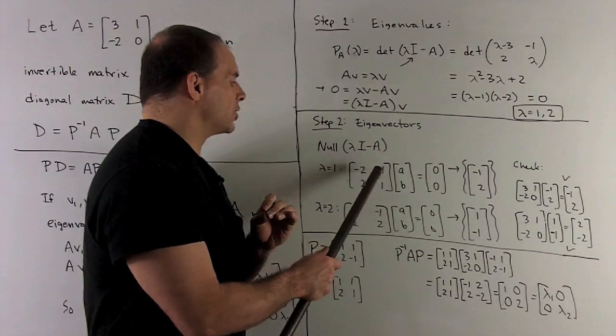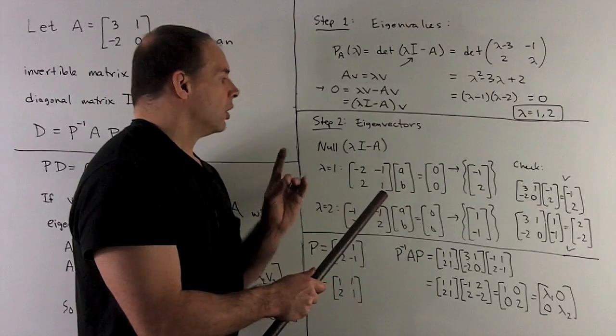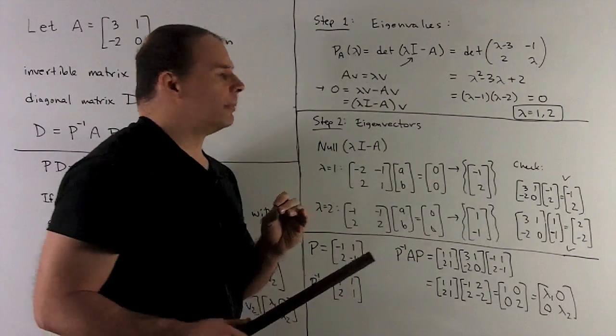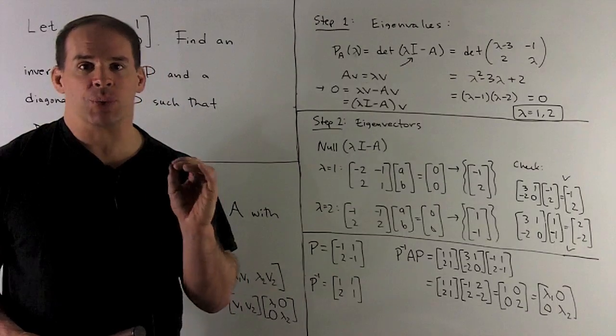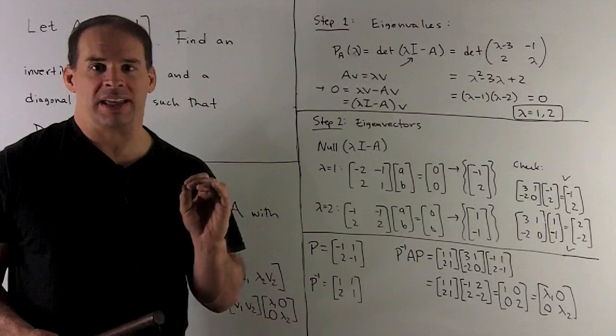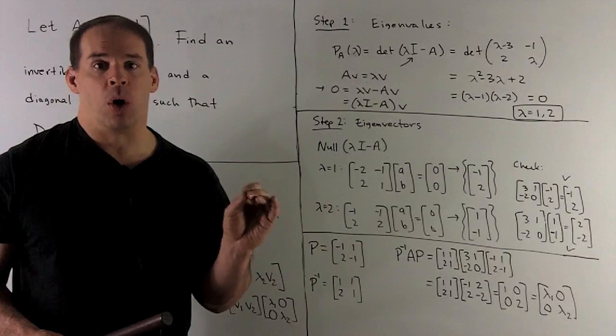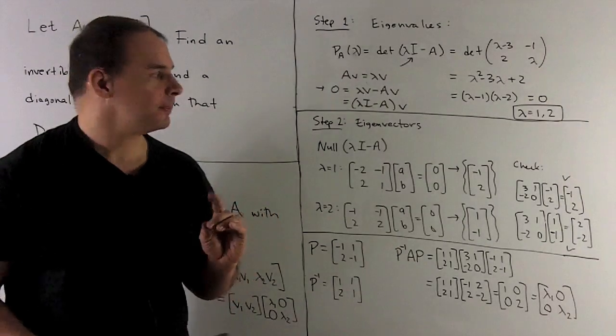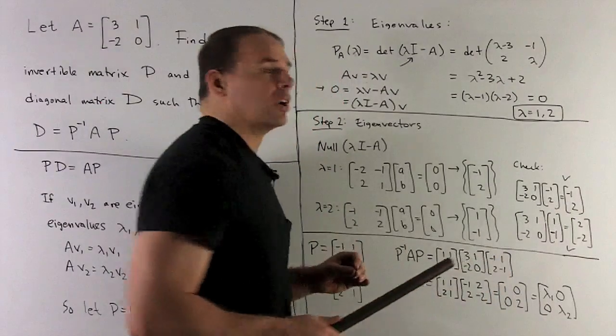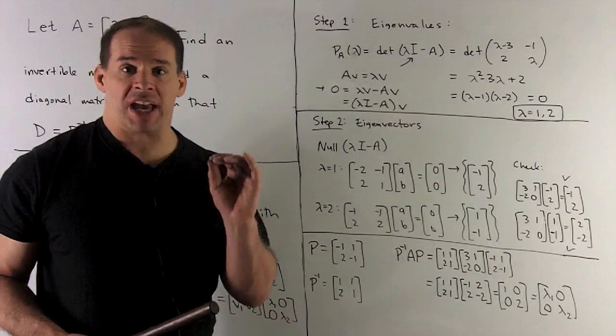If I let lambda be equal to one, I get the matrix minus two, minus one, two, one. Looking for where I hit it with a vector, I get zero out. Candidate's going to be minus one, two. If I apply A to that, I expect to get lambda V back. Here, lambda is one, so expect to get V back. When I multiply our matrix times our vector, we get our vector. Nothing happens. So, that checks out.